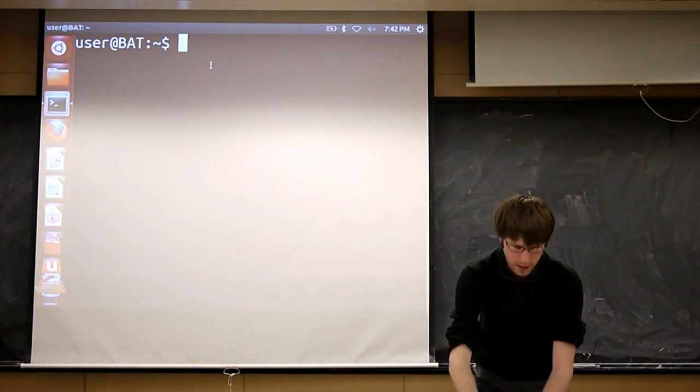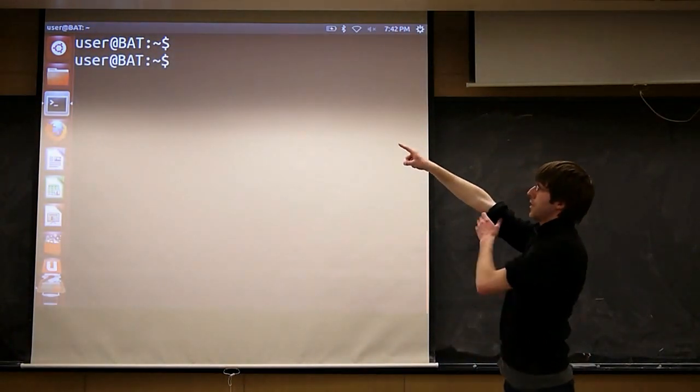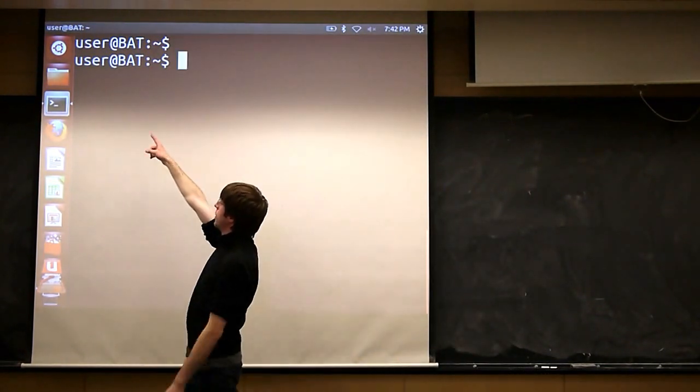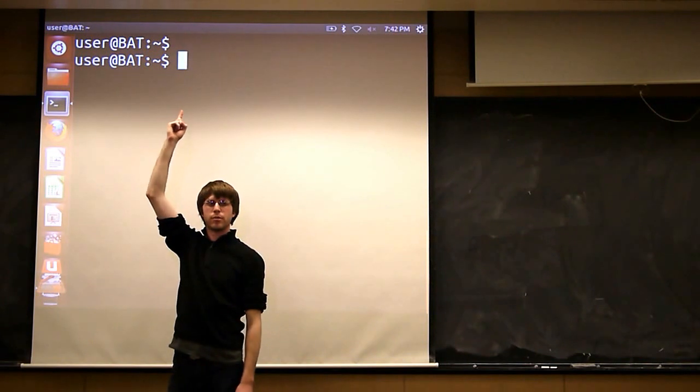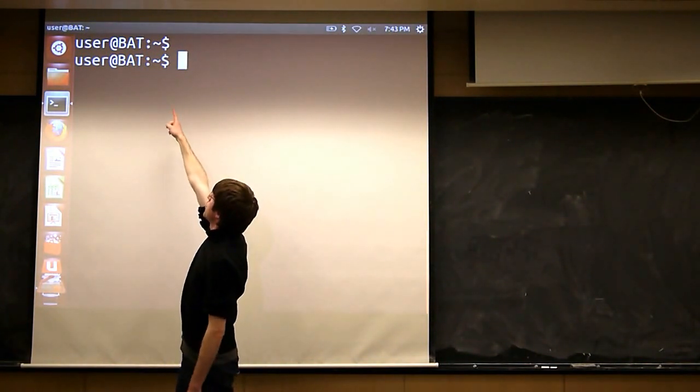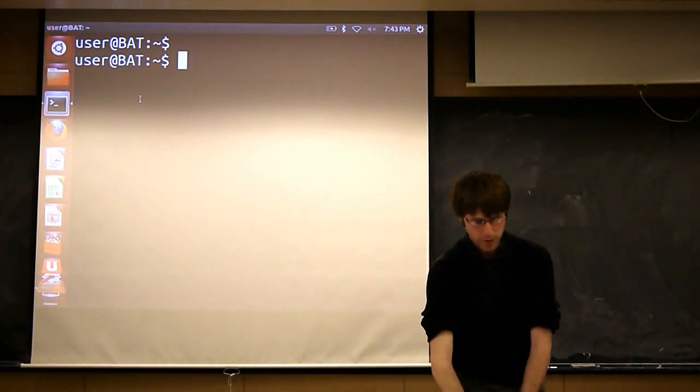You'll see whenever you're sitting inside the terminal, there's always what we call the prompt. It's that thing in the upper left-hand corner. The general format is your username at whatever the name of your computer is. The virtual machine probably says something like CU-CSVM or something along those lines. It'll be followed by a colon, followed by where you are in the file system.